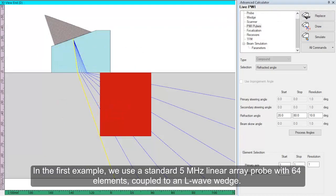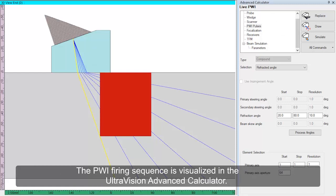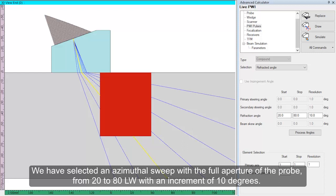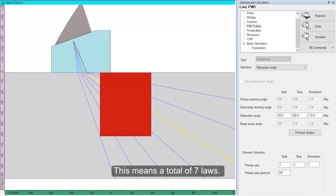In the first example, we use a standard 5 MHz linear array probe with 64 elements, coupled to an L-wave wedge. The PWI firing sequence is visualized in the UltraVision Advanced calculator. We have selected an azimuthal sweep with the full aperture of the probe from 20 to 80 degree L-waves, with an increment of 10 degrees. This means a total of 7 laws.